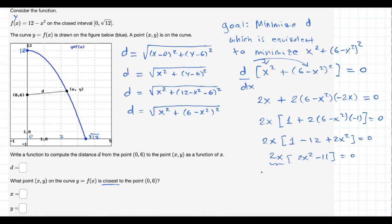2x times (2x squared minus 11) equals 0. From this part, 2x equals 0 will lead to x equals 0. One candidate for our solution. 2x squared minus 11 equals 0. When you solve for x, this will lead to x equals the square root of 11 over 2, which is approximately equal to 2.345.